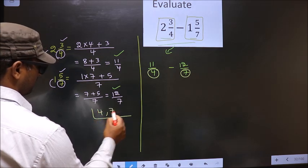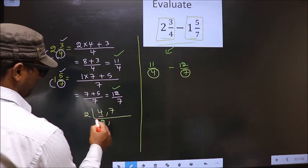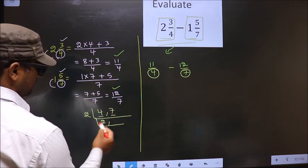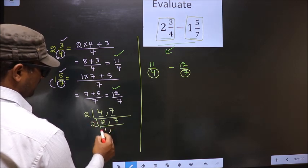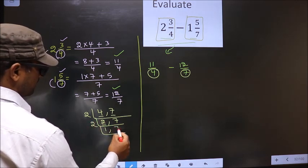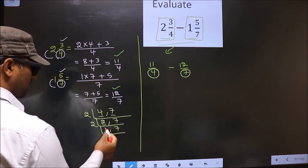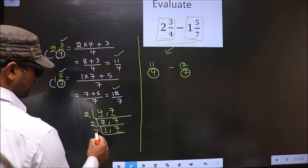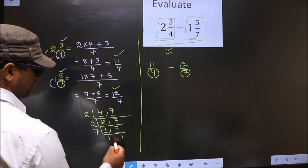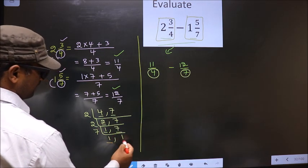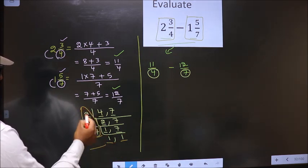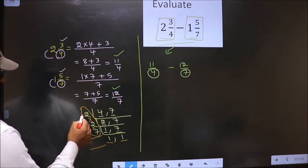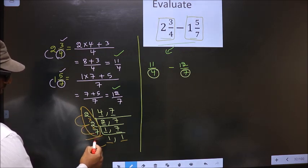The first number is 4. 4 divided by 2 is 2, and 2 divided by 2 is 1. The other number 7 is not divisible by 2, so write it down as it is. 2 is a prime number, so 7 is not divisible — write it as it is. Here we got 1, so focus on the other number 7. 7 is a prime number, so 7 divided by 7 is 1. We got 1 in both places. So our LCM is the product of these numbers: 2 into 2 into 7 = 4 into 7 = 28.